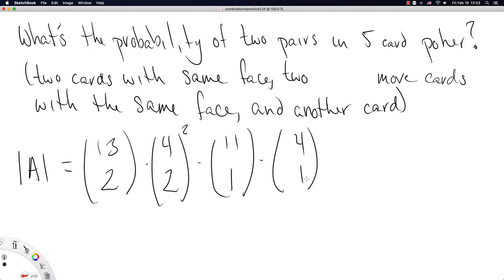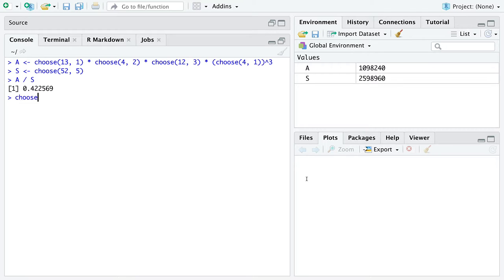The denominator stays the same. The only thing that needs to change in this probability calculation is the numerator. In R, we have 13 choose 2 times 4 choose 2 to the power of 2 times 11 choose 1 times 4 choose 1.